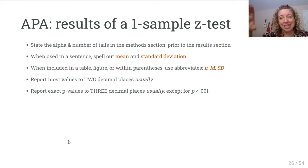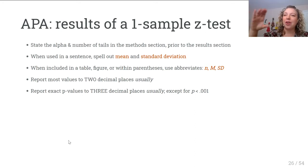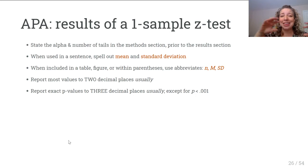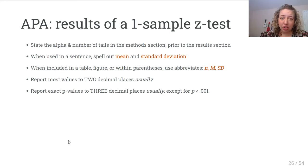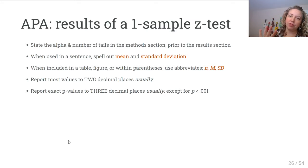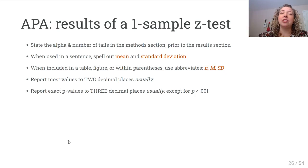The results section contains the actual results of the test you said you were going to run in the methods section. Anytime you're writing a sentence and you talk about the mean or standard deviation within the sentence, you need to write out the full words. But if those values are in a table, figure, or parentheses, you can use abbreviations. Generally, report all numbers with two decimal places. The exception is a p-value where you want three decimal places — usually three is acceptable unless your p-value is super tiny.